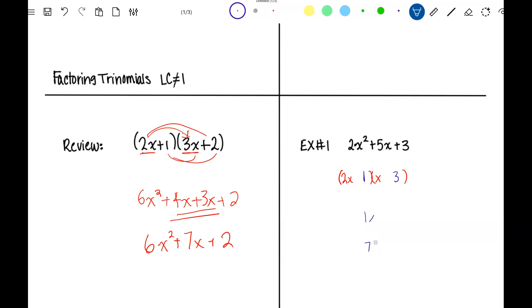So the only thing I can do to get a different answer is 3 and 1. So when I check the inside product and the outside product I do get 5x. So that's what I needed.